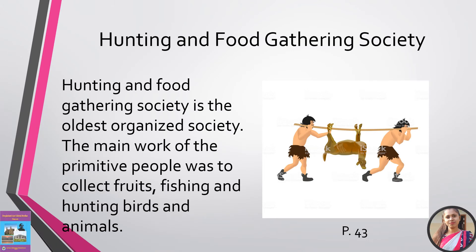Now we will discuss the hunting and food gathering society, which is the oldest organized society. The main work of primitive people was to collect fruits, go fishing, and hunt wild animals. When they could hunt, they could eat; otherwise, they had to starve. Women used to gather fruits and men went hunting. The strongest man in the group was obeyed as chief. At that time, stone was the only tool for hunting, which is why it is called the Stone Age society. The remarkable tools were the nose bear, harpoon for fishing, and needles made of bones. Men used to live in caves and woods.